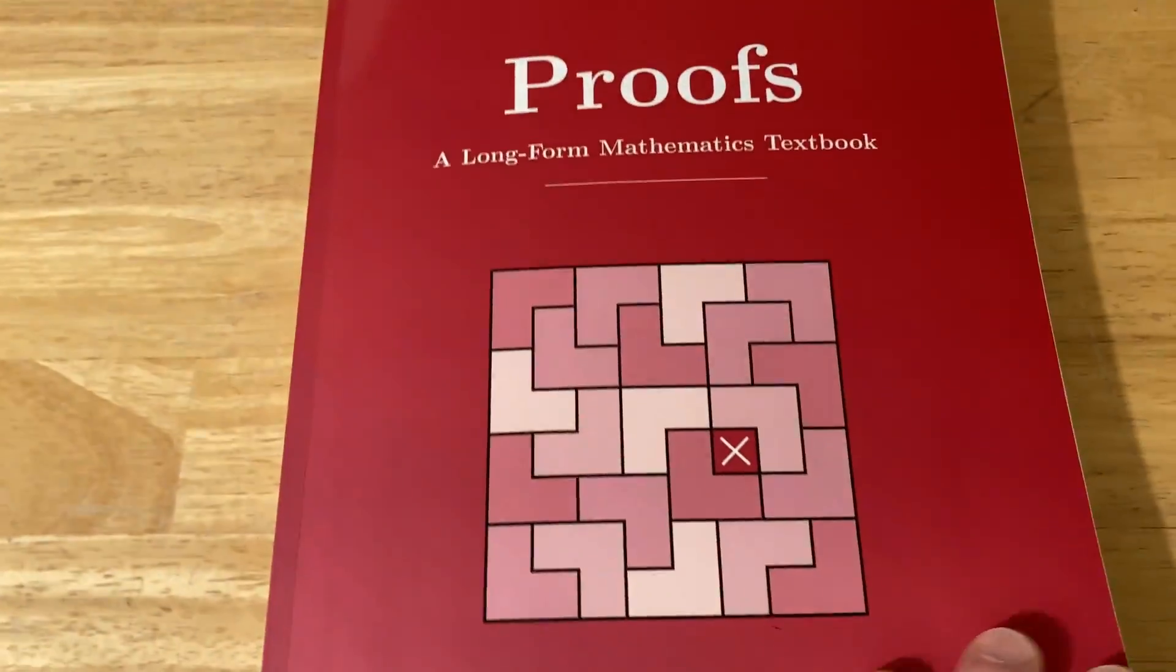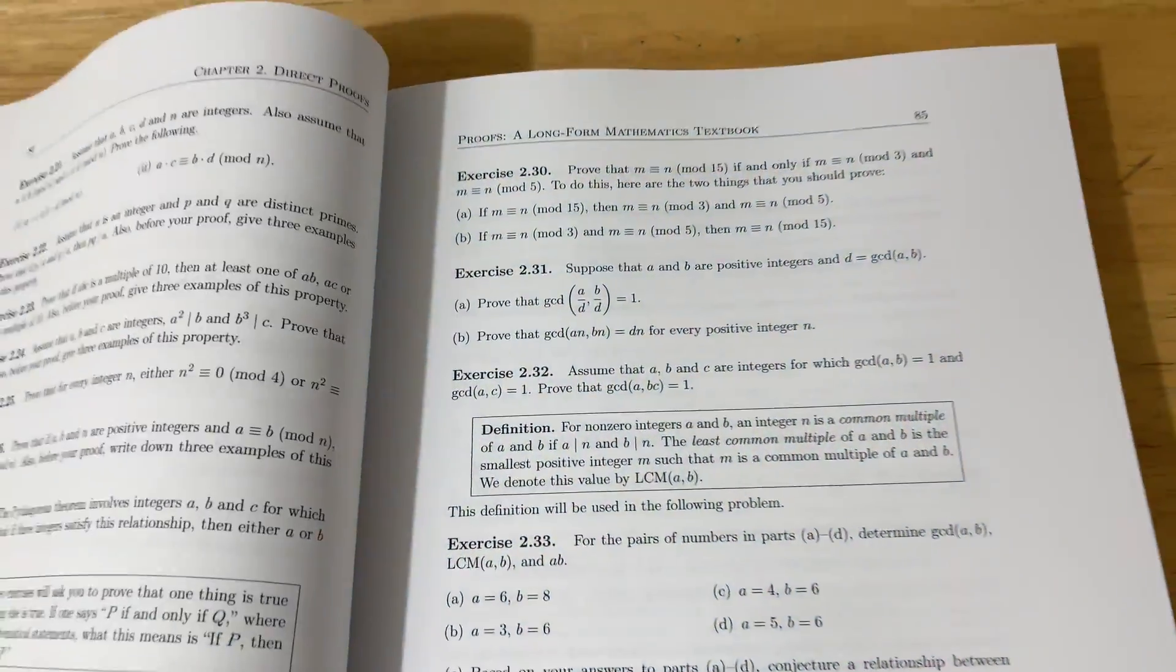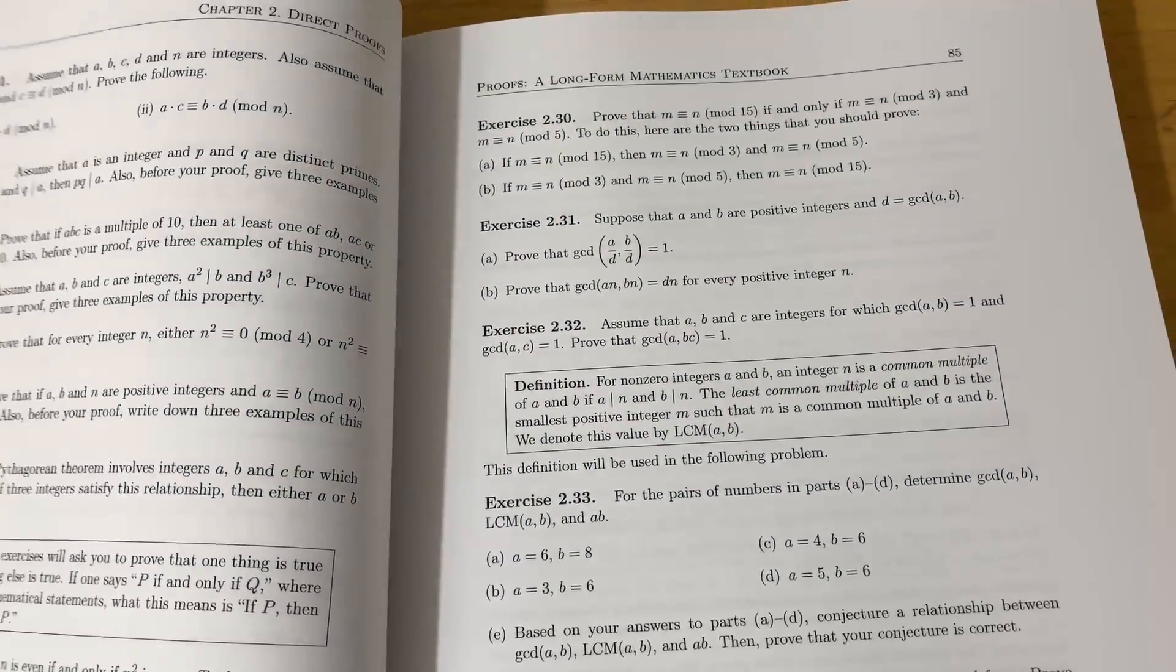So, Jay, what he did was, he did a compromise. He gives you some of the solutions on his website, longformmath.com.